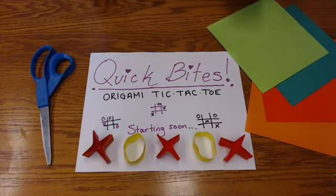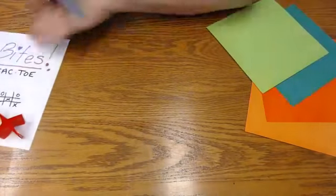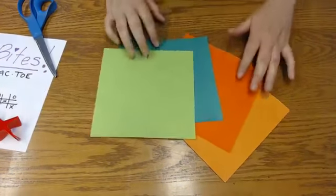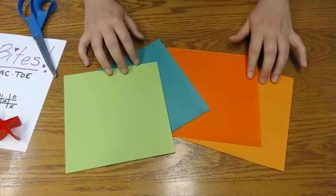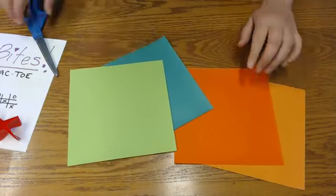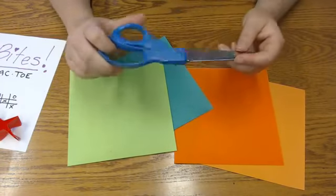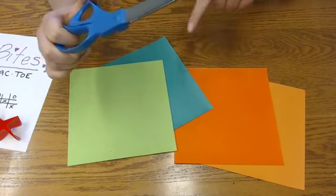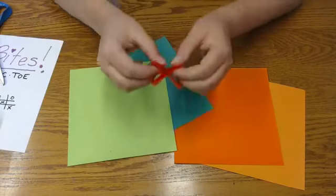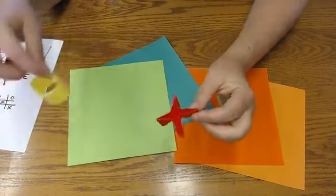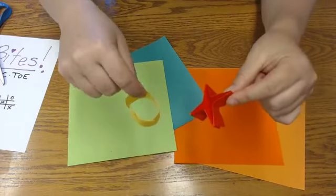What you'll need to make this origami tic-tac-toe set is four sheets of origami paper—one, two, three, four. You can make them similar colors for your X's and your O's. You'll also need a pair of scissors. We don't always use scissors in origami, but for this we're going to be making these into smaller pieces so we can make our X's and O's. They're going to look something like this—this is the X, and this is the O. This is what our final project is going to look like.